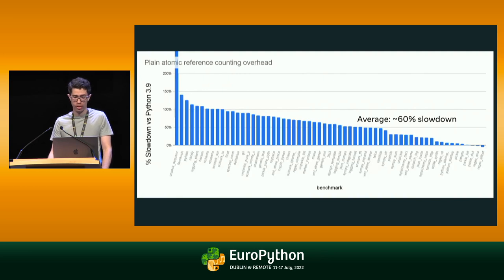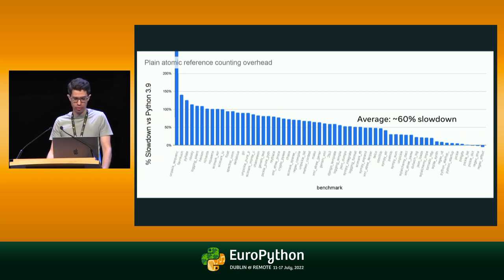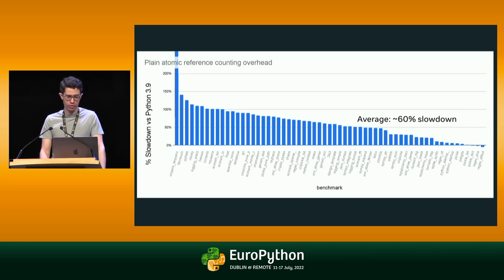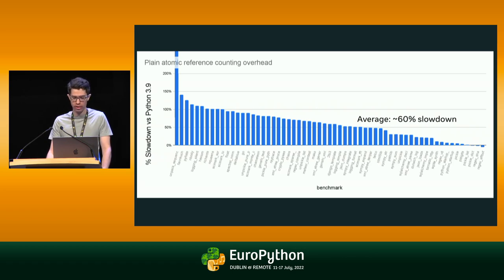The most straightforward way to make reference counting thread-safe is to use atomic operations, but atomic instructions are slower to execute than their non-atomic counterparts. For example, if you modify Python to use atomic reference counting and run the PyPerformance benchmark suite, the benchmarks take about 60% longer to run on average. This chart shows the slowdown of using atomic reference counting in each benchmark. There's big variance in individual benchmark performance, with a few benchmarks unaffected while others take more than twice as long to run.